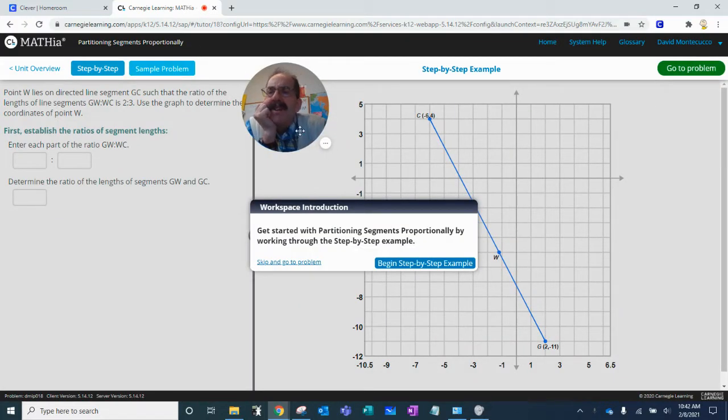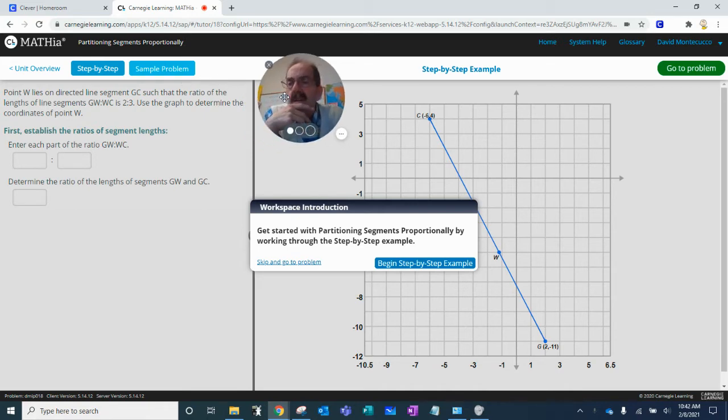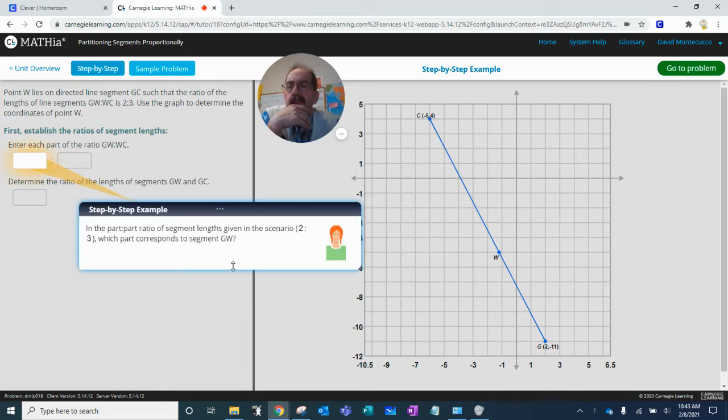Okay, so let's see if we can make sense of partitioning segments proportionally. Last time we had the numbers, this time let's see if we can create the numbers. First establish the ratio of the segment lengths. Each part of the ratio, GW, WC, determine the coordinates of point W. Begin with a step-by-step.